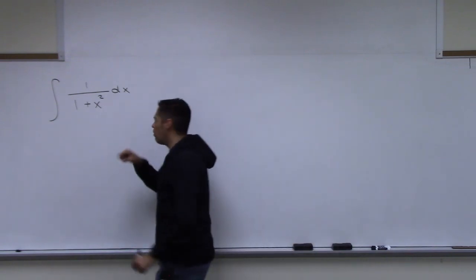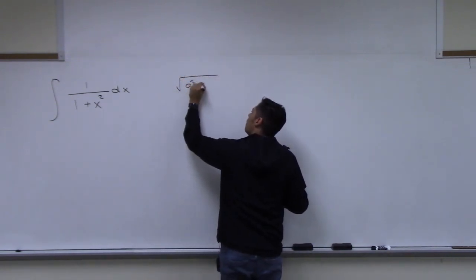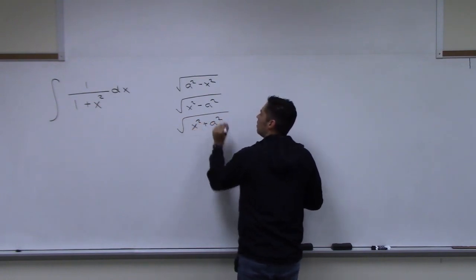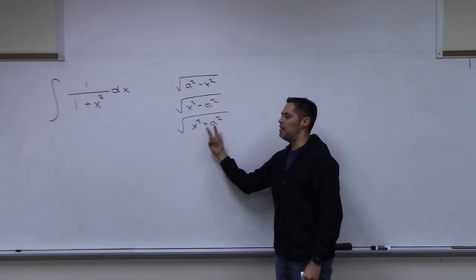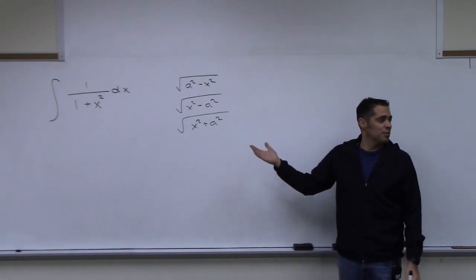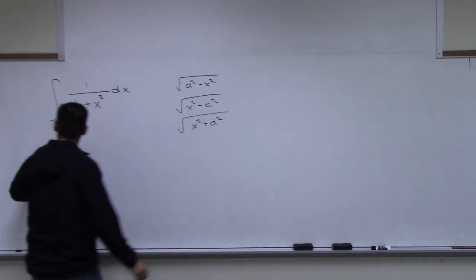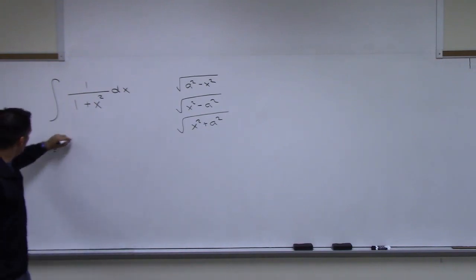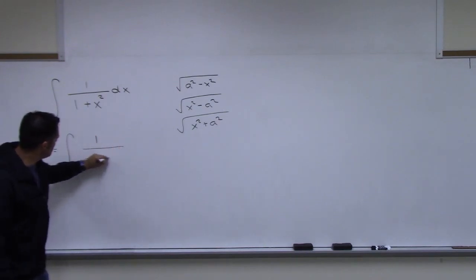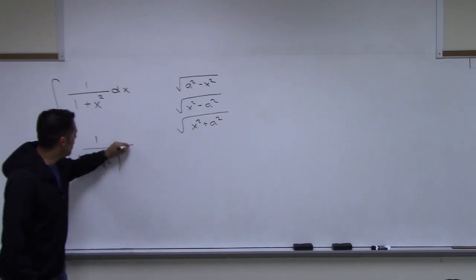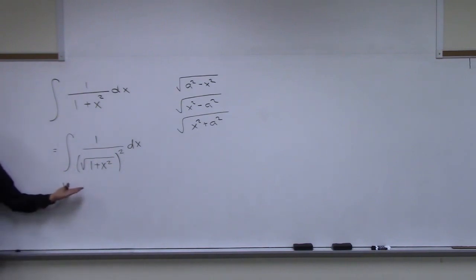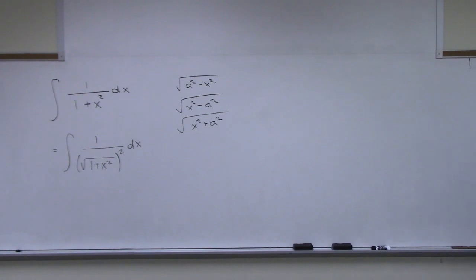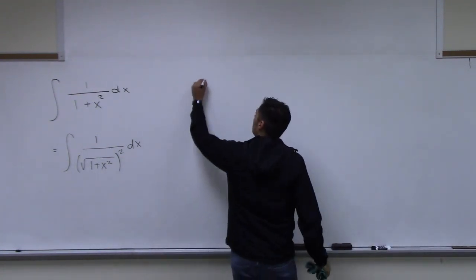We're acting as if we don't know the antiderivative is arctan x. We rewrite 1/(1+x²) as 1/(√(1+x²))². That piece inside looks like a² + x² with a = 1, so we use x = tan theta. Then dx = sec²theta d theta, and √(1 + x²) becomes sec theta.